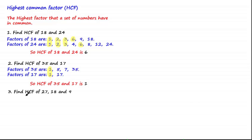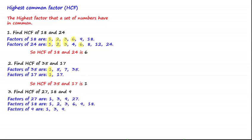Let's have a look at another example. Find the highest common factor of 27, 18, and 9. Here we're asked to find the highest common factor between 3 numbers; however, the method stays the same, as the highest common factor is defined as the highest factor that a set of numbers have in common — whether it's 2, 3, or 4 numbers. So we list the factors of each respective number. Comparing the factors, we can see common factors between 27, 18, and 9, namely 1, 3, and 9. As 9 is the highest factor, the highest common factor of 27, 18, and 9 is 9.